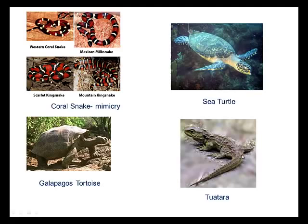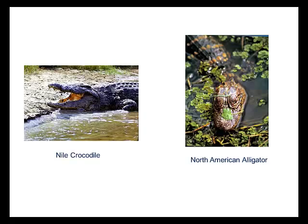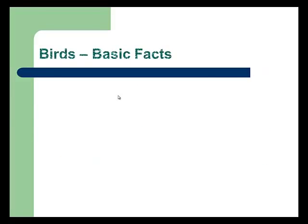Here's the tuatara, sea turtles, and a reminder from evolution — some snakes evolved similar color patterns to poisonous ones, so predators recognize the warning coloration and avoid them. Here are the crocodile and alligator as well.